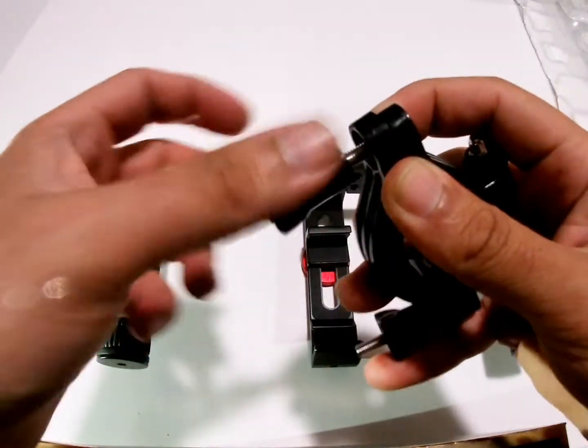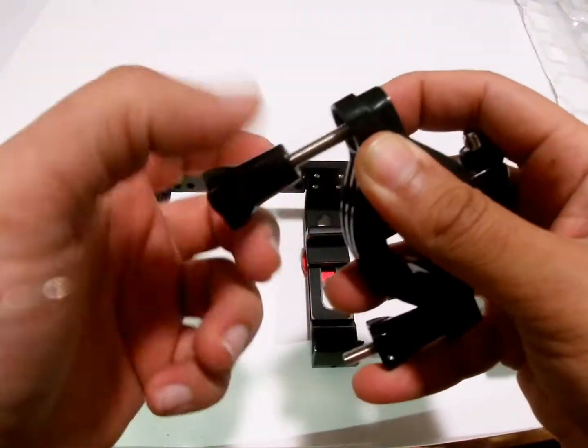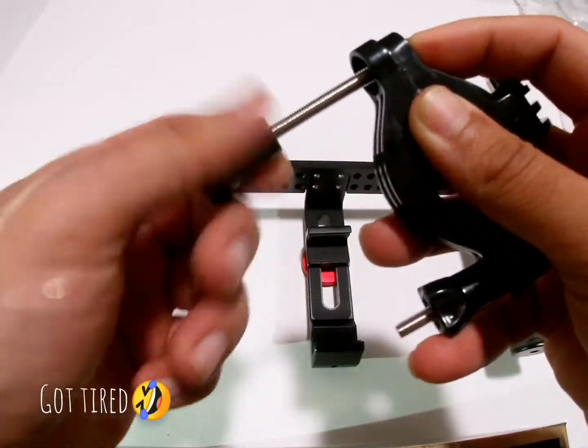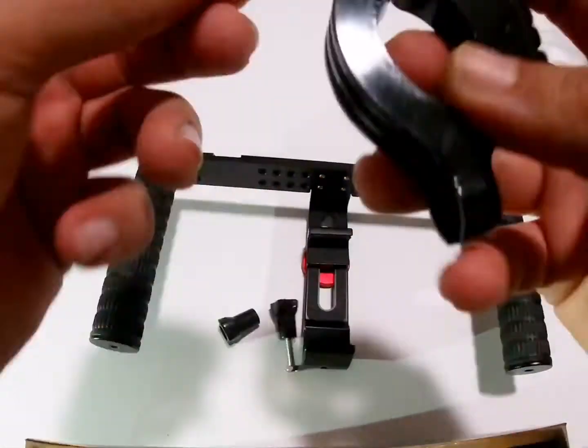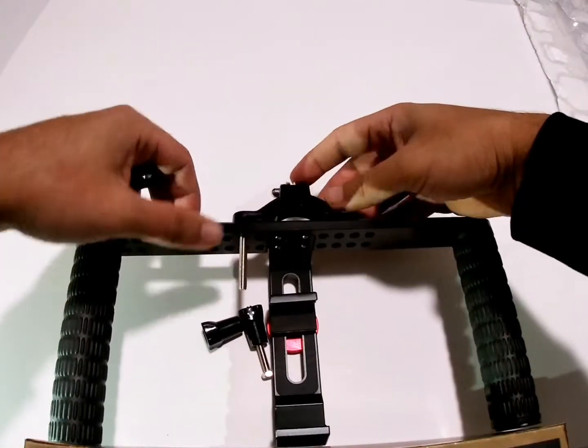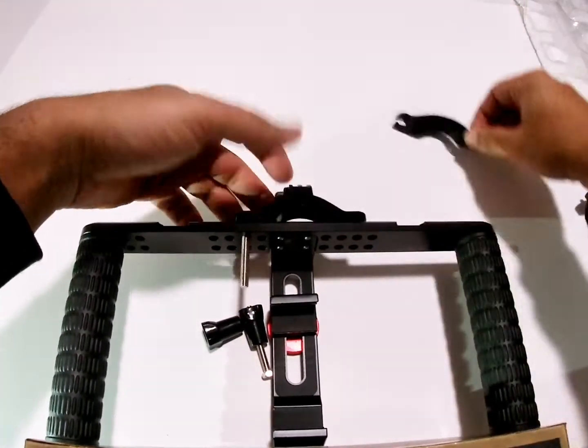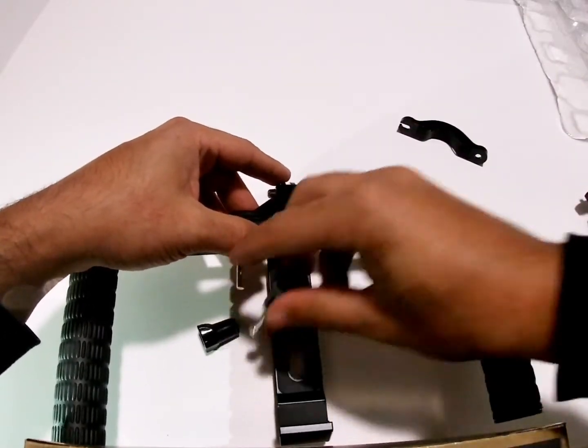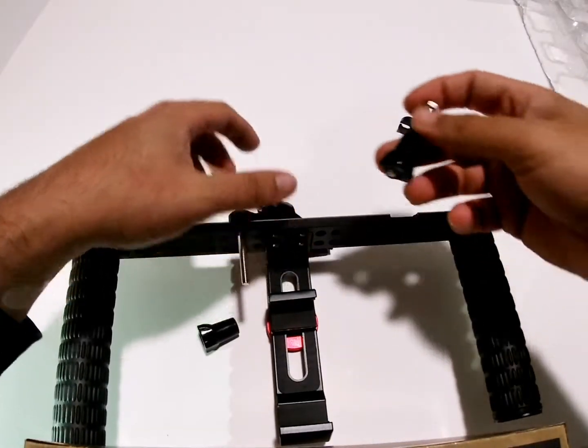What you can do is just unthread this, and then once you get this side off, all you need to do is really just slide this in at the very top.